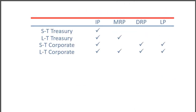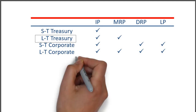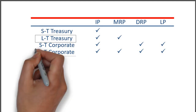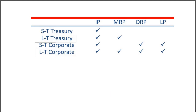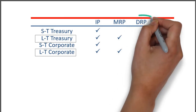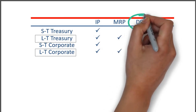In numerical terms, the difference between the interest rate on a US treasury bond and a corporate bond of equal maturity and marketability is the default risk premium, which is DRP.